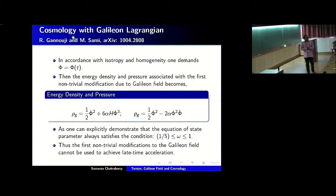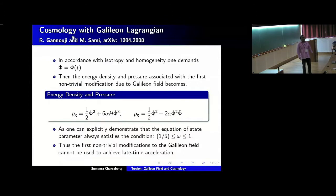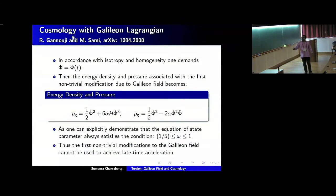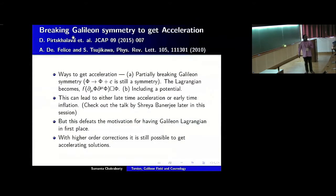The next question is what happens to cosmology with this Galileon Lagrangian. There are two aspects: inflationary cosmology or late-time acceleration. This particular paper discusses the late-time acceleration part, which is what I will concentrate on. In accordance with homogeneity and isotropy, we demand φ = φ(t). In that case, you can compute the energy density and pressure associated with the first non-trivial Galileon modification. The half φ-dot squared is the usual kinetic term from the canonical part, and the α H φ-dot cubed contribution comes from the Galileon Lagrangian. One can explicitly demonstrate that the equation of state parameter always remains between 1 and 1/5, and therefore there is no way to get late-time acceleration from this alone.